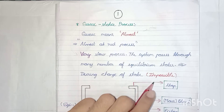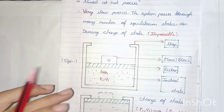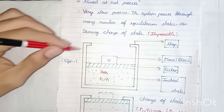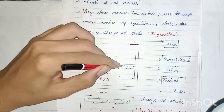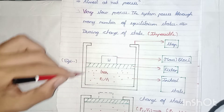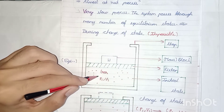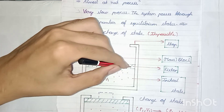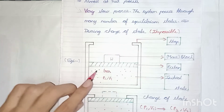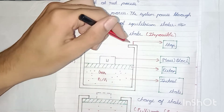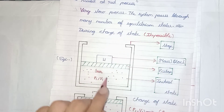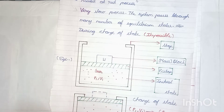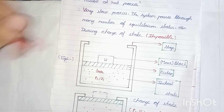Now let's move on to an experiment to find the real meaning. Consider this metal container. It consists of a piston, and below this piston you have the system, which is nothing but the gas. Above you have the piston — the green dotted line. A block with mass is kept on the piston, and below that we have the system which is the gas.